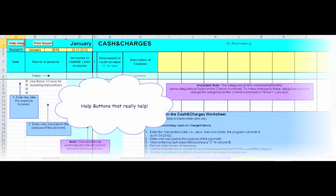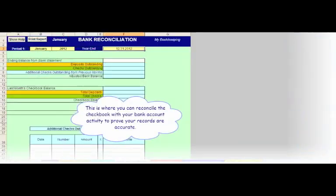There are help buttons located near the top of every sheet. This is where you can reconcile the checkbook with your bank account activity to prove your records are accurate.